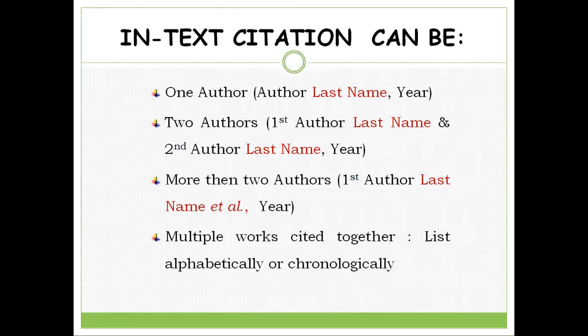In-text citation can be written in different forms depending on the number of authors present in the cited source — and this is actually where many researchers, especially beginners, are likely to make mistakes. A few points to remember: point number one, the first name and second name of the authors are never used — only the last name is used. Only the author's last name and the year are incorporated in the in-text citation. In case of two authors, the word 'and' will separate the author names. If there are more than two authors, you use the word 'et al.', meaning 'and others'.